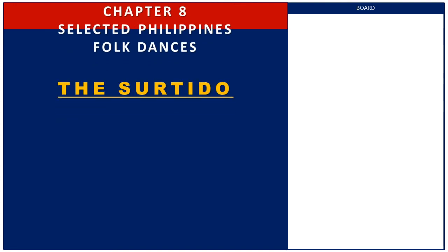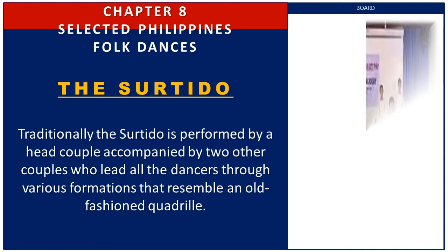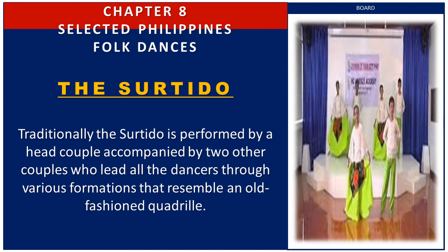Next is the Surtido. Surtido literally means assortment, and this square dance combines influences of French, Spanish, and Mexican dance. Traditionally, the Surtido is performed by a head couple accompanied by two other couples who lead all the dancers through various formations that resemble an old-fashioned quadrille. Here is the example picture of the Surtido.